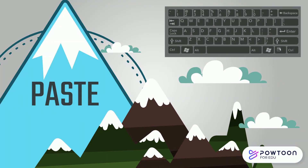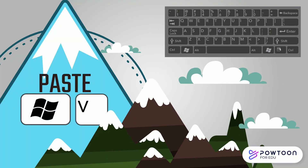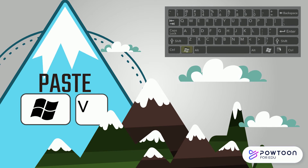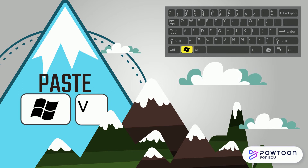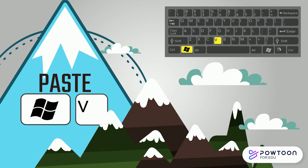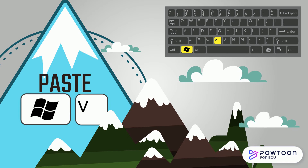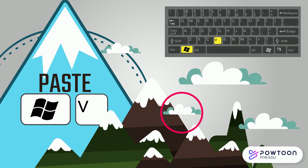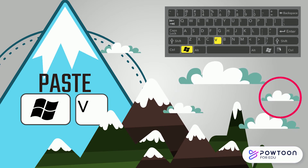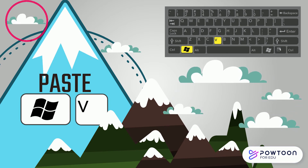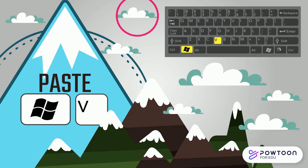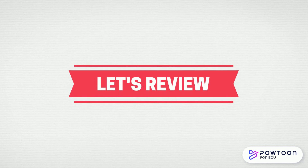To paste an item, simply click your cursor where you'd like to paste it. Hold down the Windows key on your keyboard and press the V key — that's V as in Velcro. But be careful, every time you press it, you'll get another copy. So let's review.